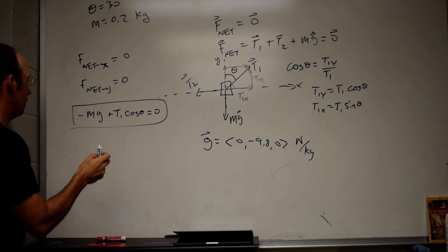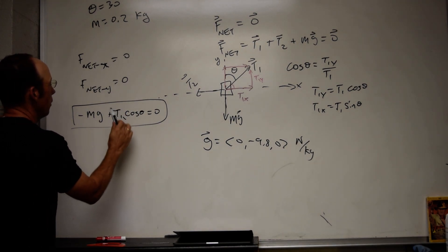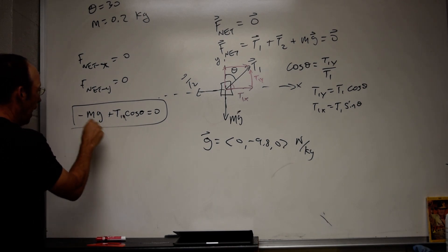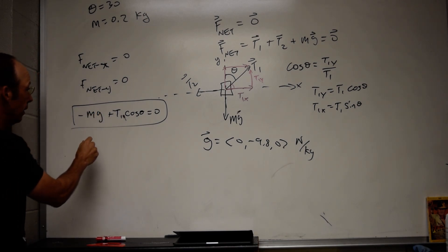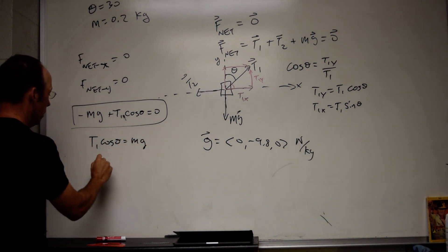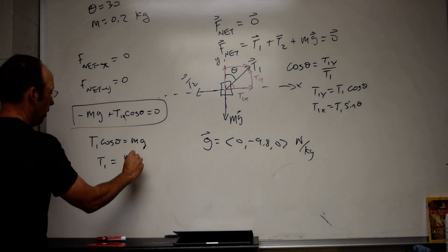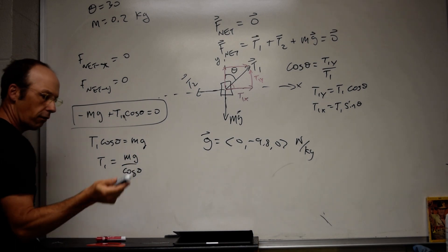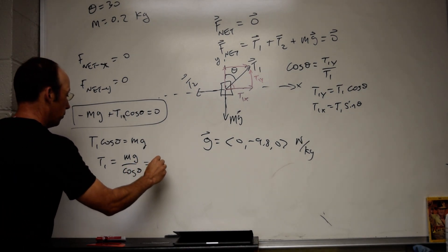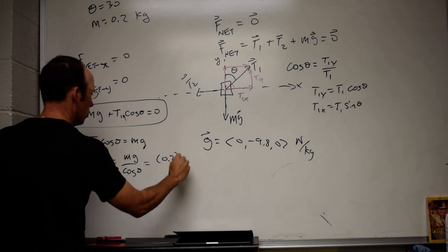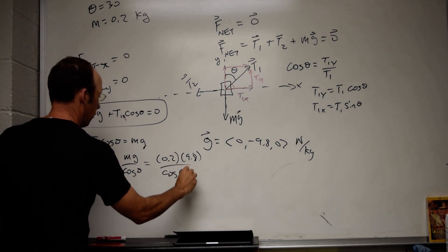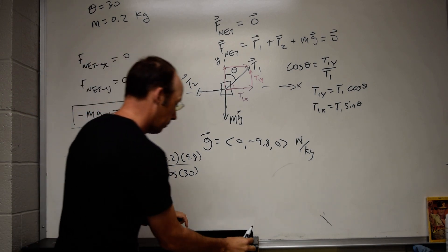Let's do that. This is T1. That's the magnitude of T1. So I add mg to both sides. And I get T1 cosine theta equals mg. T1 equals mg over cosine theta. I should have read the force right there. Oh, well. I'll do that in a second. And that's going to be equal to 0.2 times 9.8 divided by the cosine of 30.